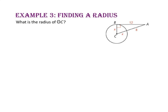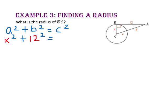In example 3, we will find a radius. What is the radius of circle C? Segment BA is a tangent to circle C because it is perpendicular to the radius. What we have created is a right triangle with one leg X, the other leg 12, and the hypotenuse 8 plus X. Let's use the Pythagorean theorem to solve for X. Substituting X for A, 12 for B, and X plus 8 for C, and squaring A, B, and C, we get X squared plus 144 equals X squared plus 16X plus 64.